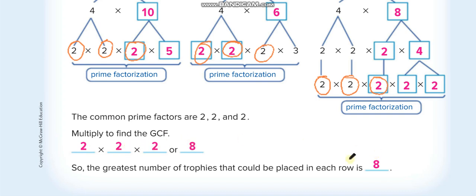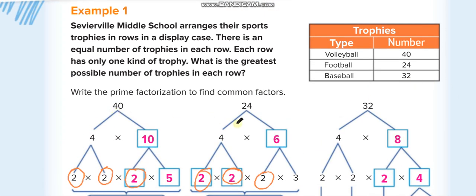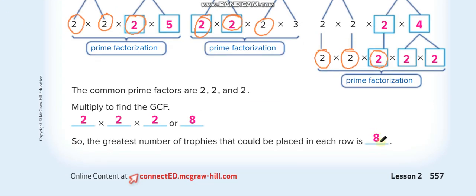So the greatest common factor, the GCF, for 40, 24, and 32 is 8. This is the first way of finding the GCF — greatest common factor. If you don't understand anything, rewind the video and watch it again.